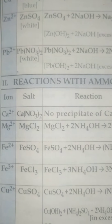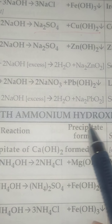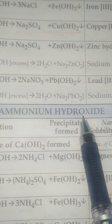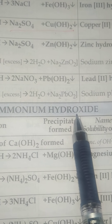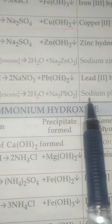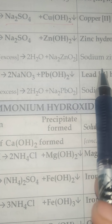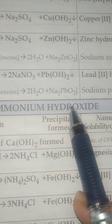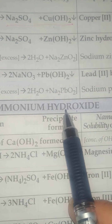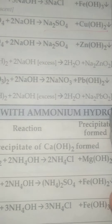Now the next section covers the reaction with ammonium hydroxide. As already mentioned, ammonium hydroxide is a weak alkali compared to sodium hydroxide, meaning it will dissociate only partially to give hydroxyl ions.